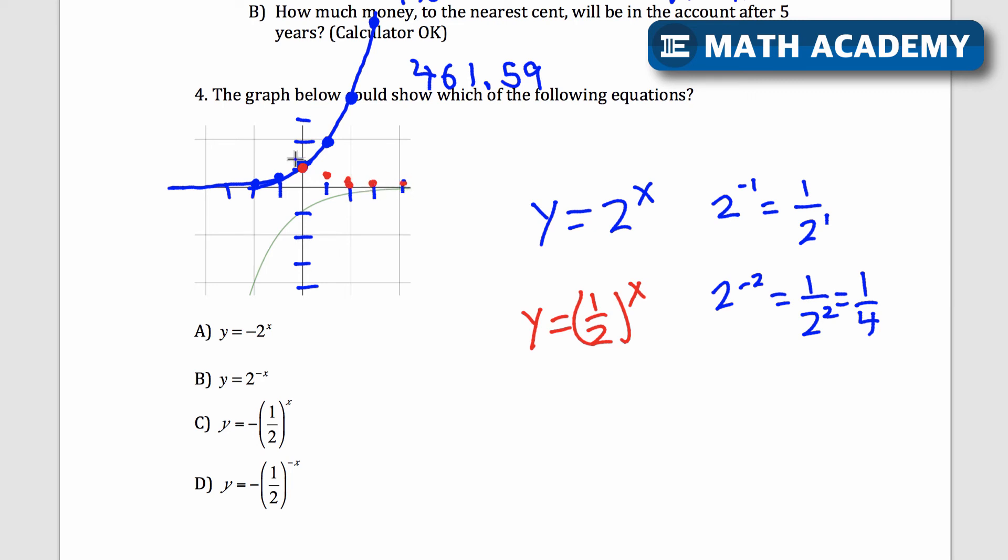If it goes, if it's 1 half as it goes to the right, 1 half of the height that I used to have, well, going to the left would be double. So this was 1 16th, 1 8th, 1 4th, 1 half, 1. This is going to be 2, and then this would be 4 right here.